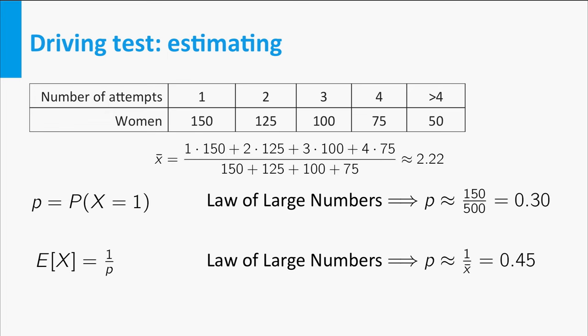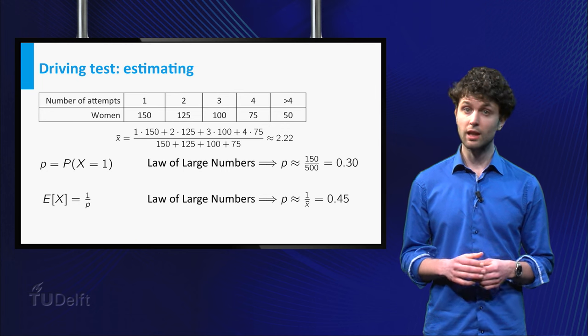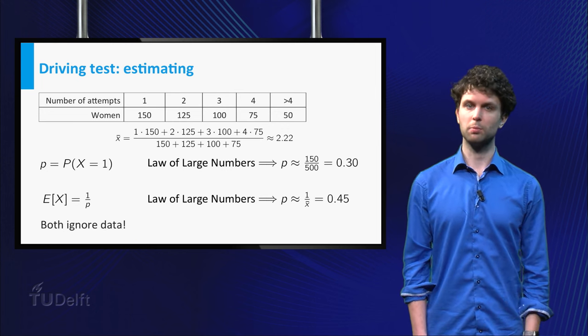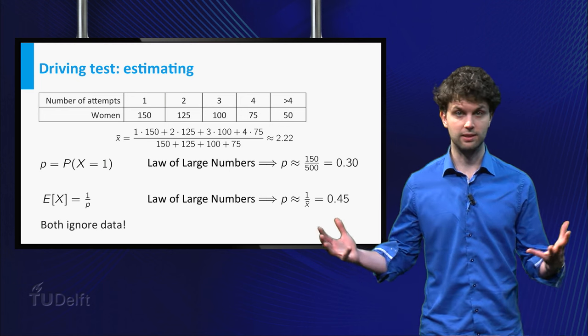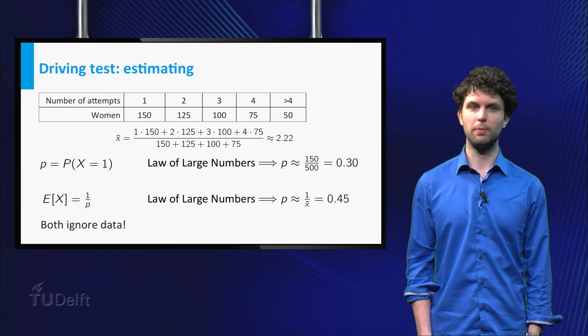Let's try another method. Recall that the expectation of a geometric distribution is 1 over P. So again, the law of large numbers suggests to use 1 over the sample mean as estimate for P. However, you will have to ignore the last column in order to compute this average. So this method over estimates P, since it leaves out the women who need more than 4 tries to pass.